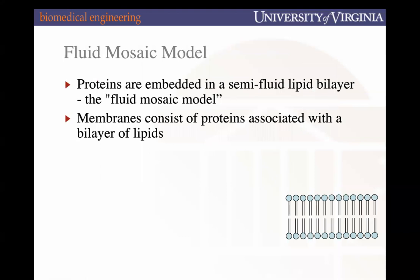There is a model called the fluid mosaic model to help us understand how a cell membrane moves and functions. We believe the lipid bilayer is a semi-fluid structure — it's not stationary; there's wiggling and moving. That degree of wiggling and moving goes up and down with temperature. In a research lab, you'd put cells on ice to try and stop that wiggling.